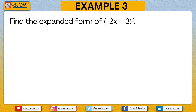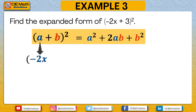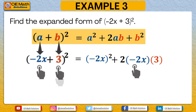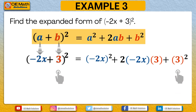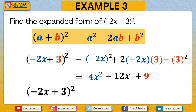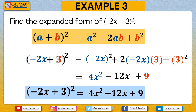Moving on to example 3: we will expand negative 2x plus 3 raised to 2. Following the algebraic identity, a is negative 2x and b is positive 3. a squared is negative 2x raised to 2, which equals 4x squared. 2ab is 2 times negative 2x times 3, giving negative 12x. b squared is 3 squared, equal to 9. Therefore, negative 2x plus 3 raised to 2 equals 4x squared minus 12x plus 9.